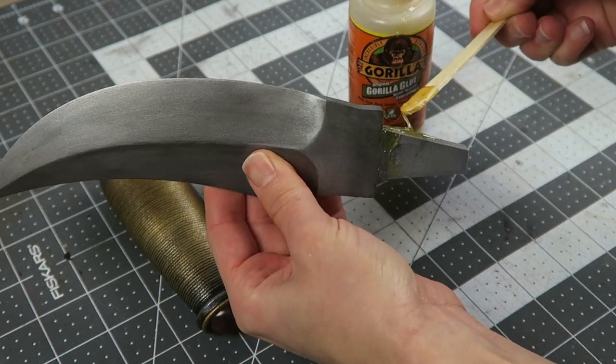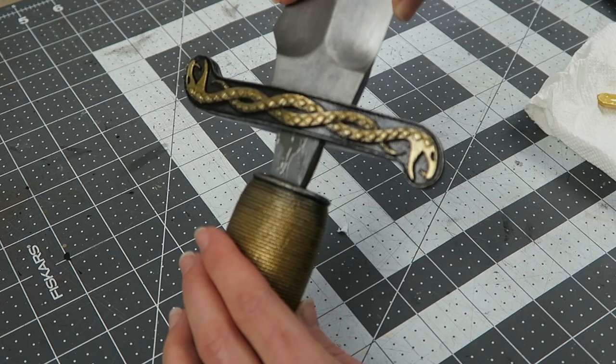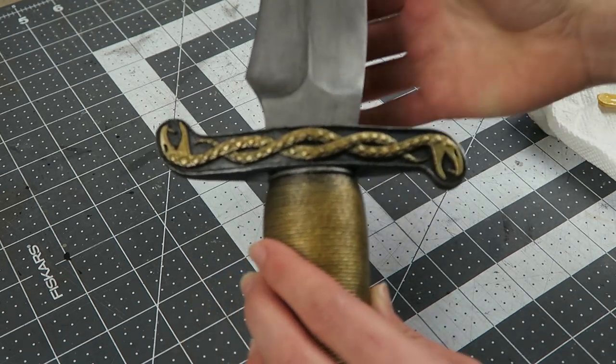While that was drying, I glued the rest of the knife together using gorilla glue. So the three parts just slide into each other. There is a little bit of wiggle room there which will be filled in as the gorilla glue expands.